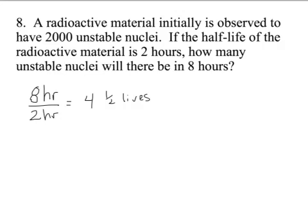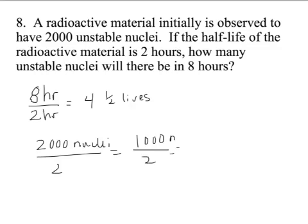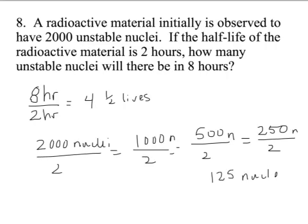You're starting out with 2,000 unstable nuclei. After the first half-life, there would be 1,000 nuclei remaining. After the second half-life, you would have 500 nuclei. After the third, you would have 250 nuclei. And when you divide it the fourth time, you end up with 125 nuclei.